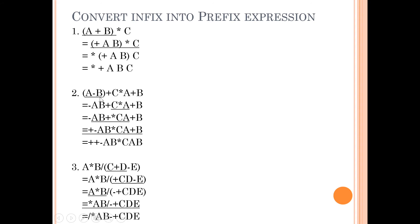Ab dekhte hain: a minus b plus c star a plus b. Yahan bracket pehle solve karenge toh minus a b. Ab kitne operators bache: plus, star, plus. Sabse zyada precedence star ka hai toh star solve karenge — star c a. Ab do plus bache, dono ka precedence same hai toh left to right — pehle left wala solve hoga. Plus ko aage put karke baaki parts waise ke waise rakhne hain, phir last plus bhi aage put karna hai.